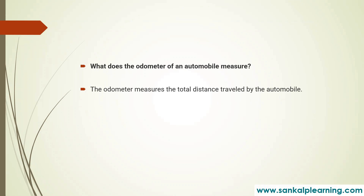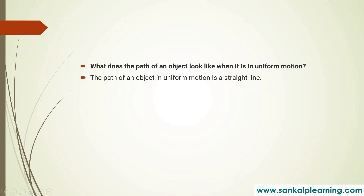The next question is: what does the path of an object look like when it is in uniform motion? The path of an object in uniform motion is a straight line. So for uniform motion, the nature of the path is a straight line.